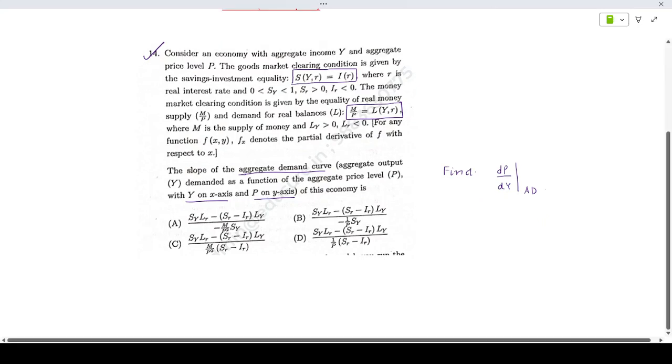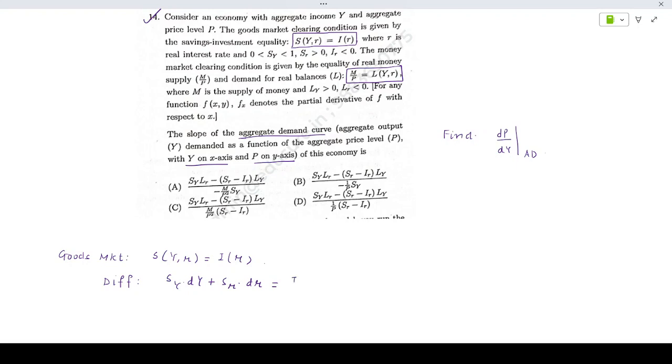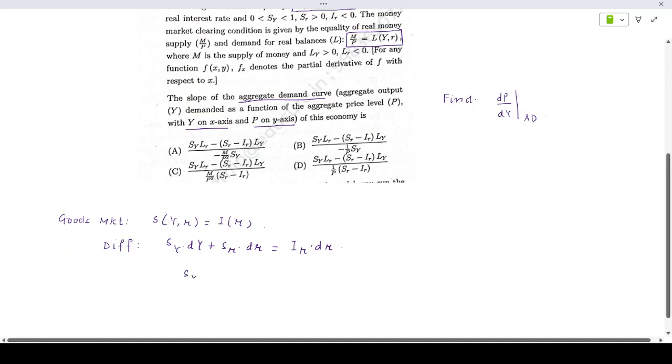First, let's go to the goods market equilibrium, which is S as a function of Y,r equals I(r). If we differentiate this completely, it will be Sy dY plus Sr dr equals Ir dr. From here I can write Sy dY equals (Ir minus Sr) dr. This is equation 1.